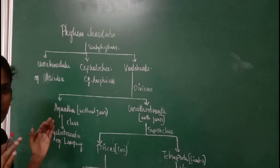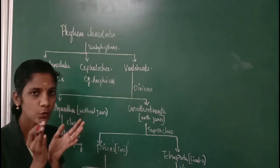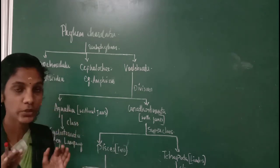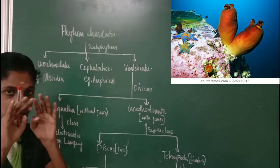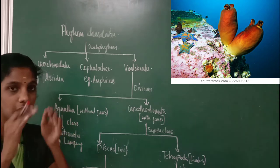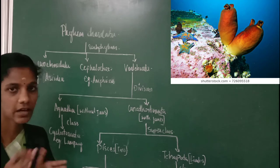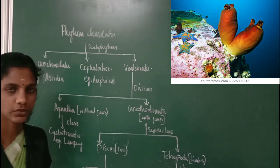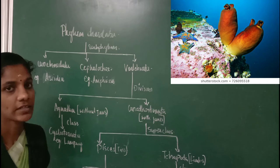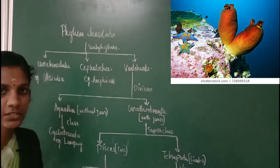These animals have a peculiarity that their body is always covered with a loose, tough covering known as a tunic. The tunic is made with a substance known as tunicine. Example: Ascidia. Ascidia is covered with a tough, loose covering known as tunic, made with the substance tunicine.